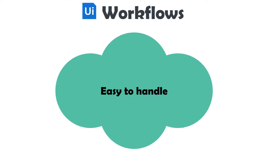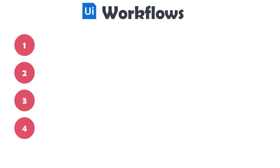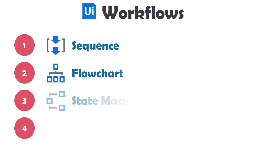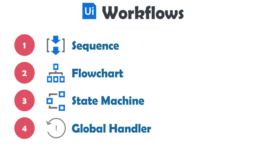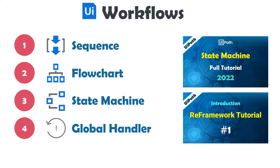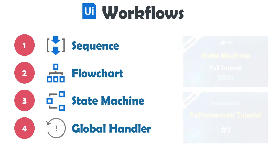Workflows make your process easier to handle in case of exceptions. There are four layouts of workflows: Sequence, Flowchart, State Machine, and Global Handler. Which layout to use depends on your code — use Sequence to execute activities one after another, or Flowchart if you have decisions and need to repeat steps. Please notice that you can only have one Global Handler workflow in the process, but you can create as many other workflow layouts as you like. In one process you could have all workflow layouts together — some sequences, some flowcharts, some state machines — but only one Global Handler.